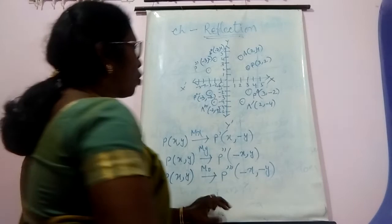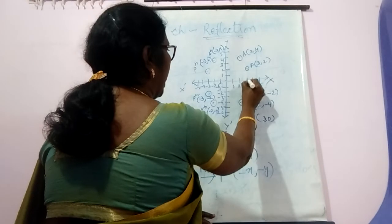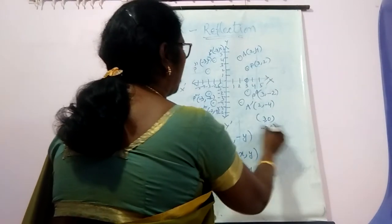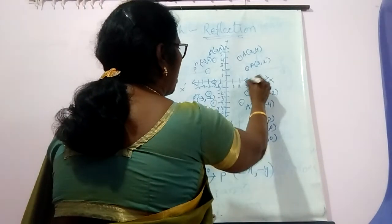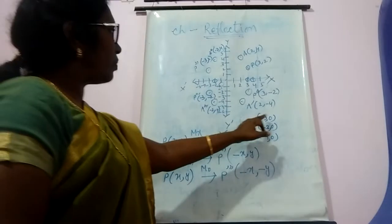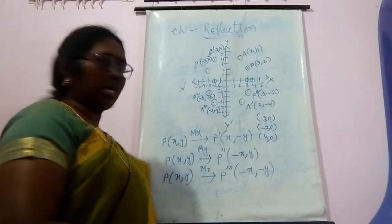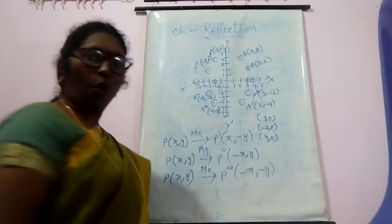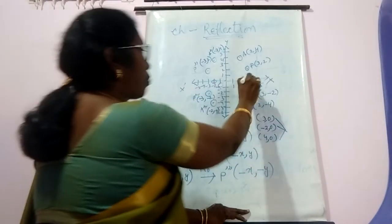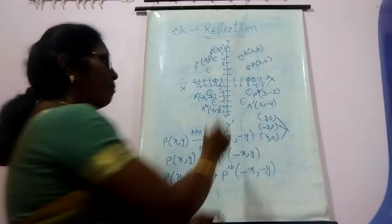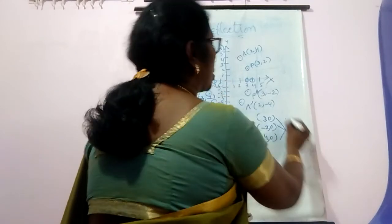Let me explain one more point. Points like (3, 0), (-2, 0), and (4, 0) all lie on the x-axis, and everywhere the y-coordinate is 0. That means when you join all these points, you get the x-axis. So the equation of x-axis is y = 0.